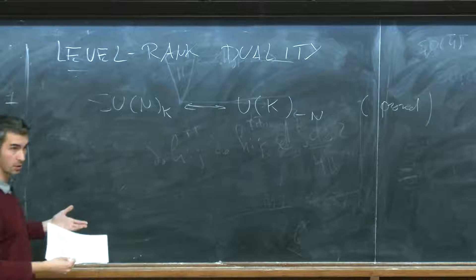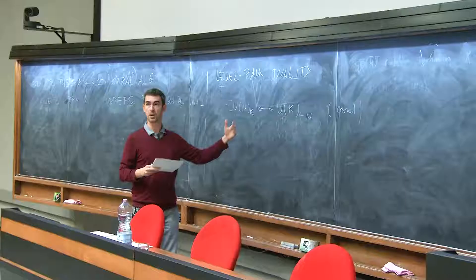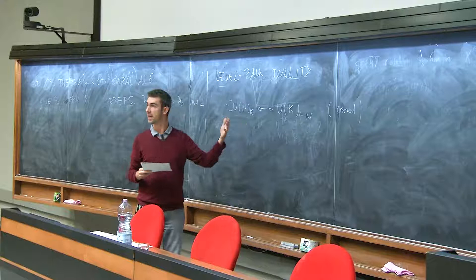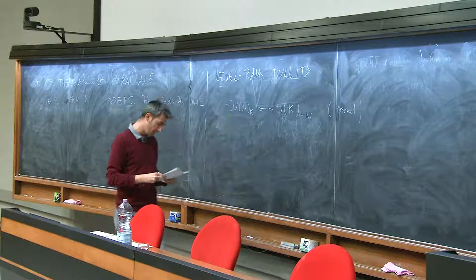We will not go through the derivation of this. The derivation essentially starts with two-dimensional bosonization — the fact that free fermions can be described with a WZW model — and then one has to do some manipulations, and one can prove this.